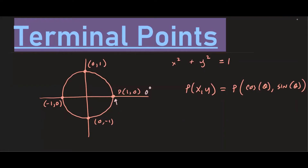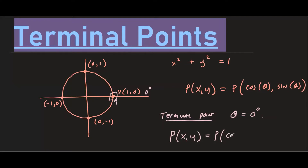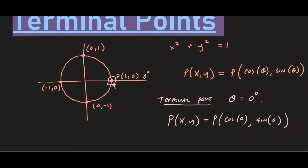If we want to find the terminal point determined by the angle θ = 0 degrees, we look at the starting point (1, 0). The x-coordinate corresponds to cosine of 0, which is 1, and the y-coordinate corresponds to sine of 0, which is 0. So the terminal point for 0 degrees is (1, 0), because 0 degrees terminates right there.